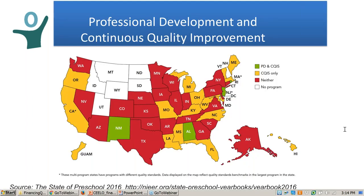This slide gives a sense of where we are in terms of professional development and continuous quality improvement systems — two keys to improving quality. The green states, not very frequent, are those that have both strong professional development and strong continuous improvement systems. Yellow states meet the benchmark for continuous quality improvement systems only. Red states have neither.